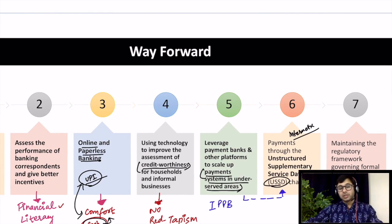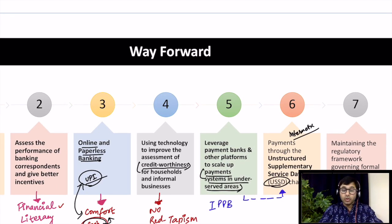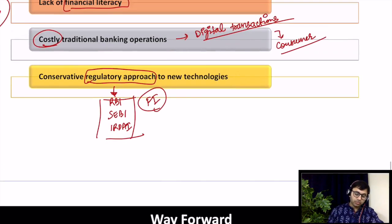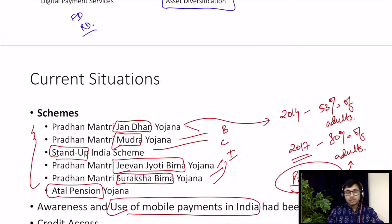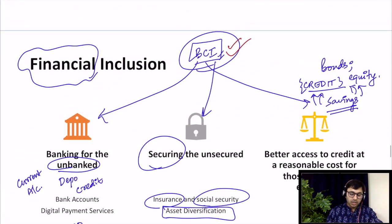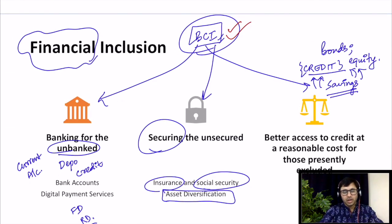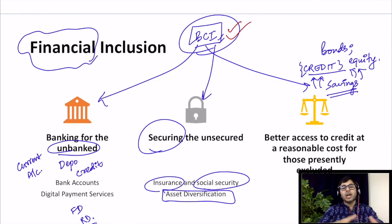That was it. Just remember BCI and majority of things are done. In the interview, and especially in RBI, they often ask what is financial inclusion and a lot of students are unable to frame an answer. I hope the Niti Aayog report and analysis will help you understand and structure your idea about financial inclusion. All the very best. Take care. If you like this video, do subscribe to the channel and don't forget to press the bell icon.